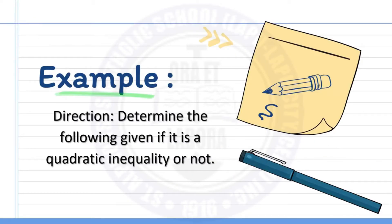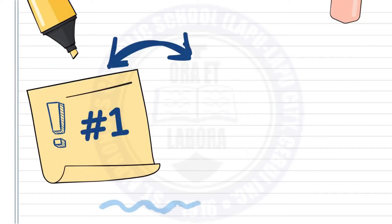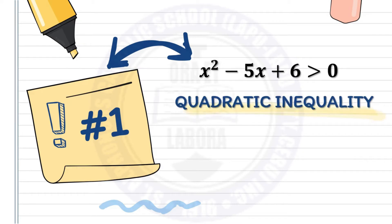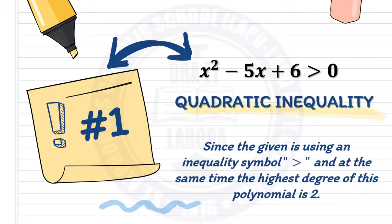Examples. Direction: Determine the following given if it is a quadratic inequality or not. Number 1: x squared minus 5x plus 6 greater than 0. This is a quadratic inequality, since the given is using an inequality symbol greater than, and at the same time, the highest degree of this polynomial is 2.